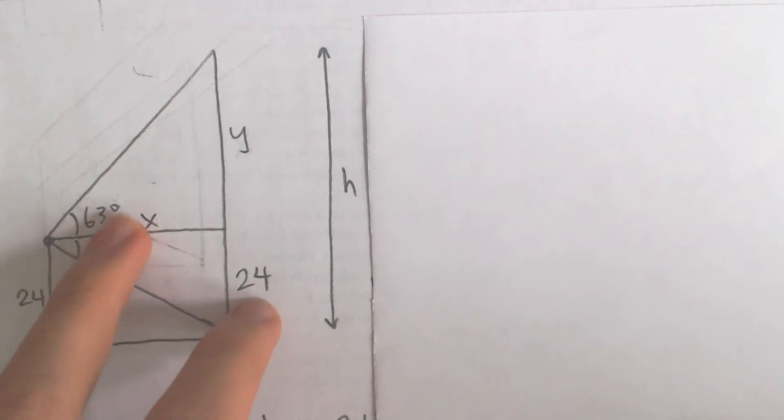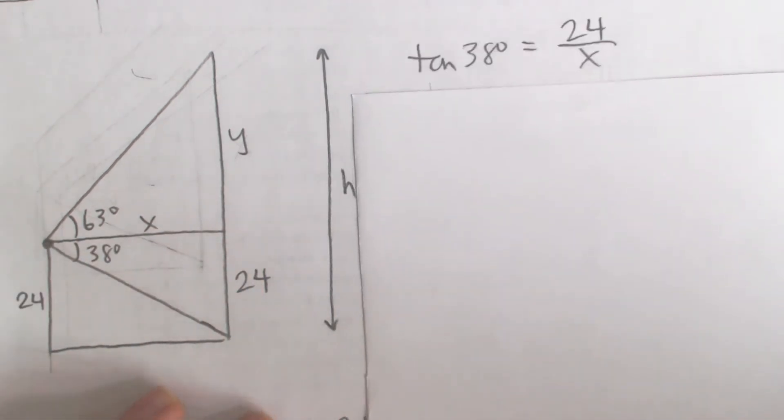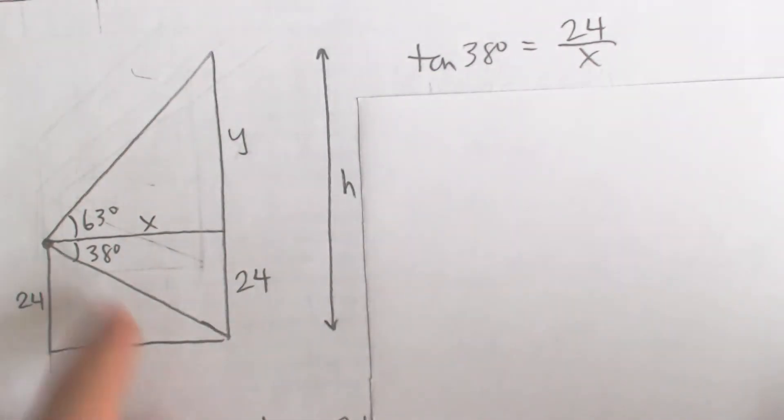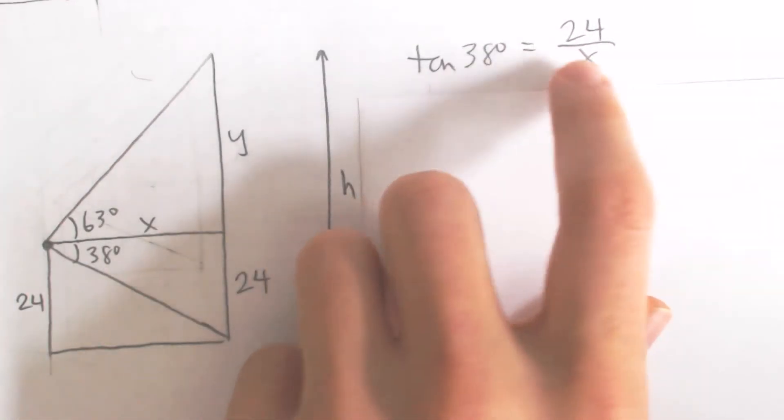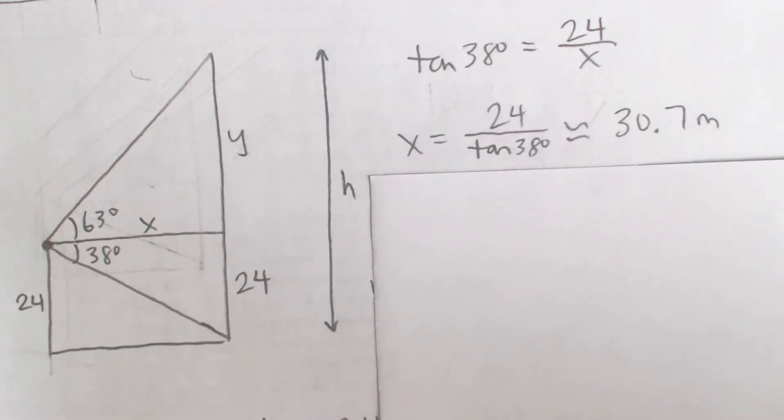How do we relate these two sides and this angle? Notice that for this angle, we have the opposite side and we want to find the adjacent side. Opposite and adjacent are related by the tangent ratio, so we can say that tangent of 38 degrees equals opposite divided by adjacent, which is 24 divided by x. Tangent 38 is a known value, 24 is a known value, so we can solve for x by multiplying both sides by x and dividing both sides by tangent 38. This distance x is approximately 30.7 meters.